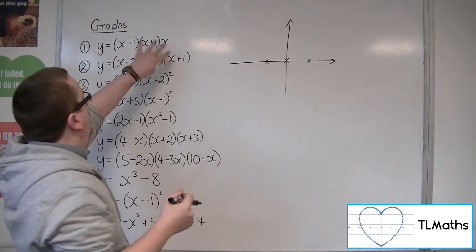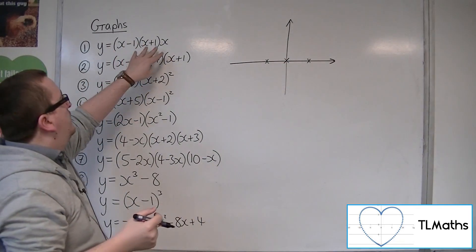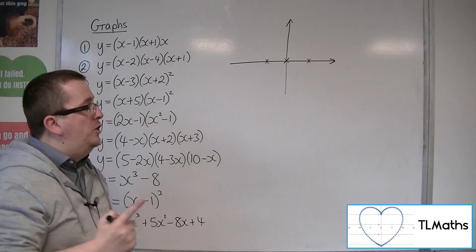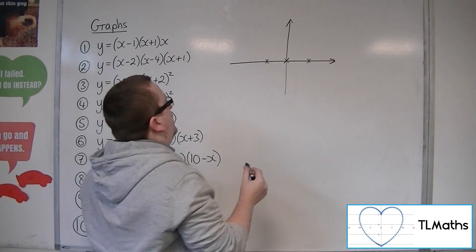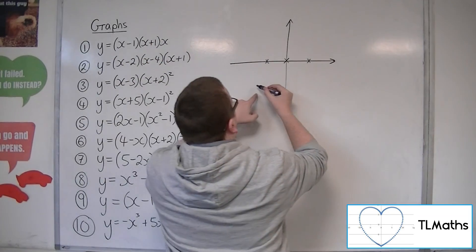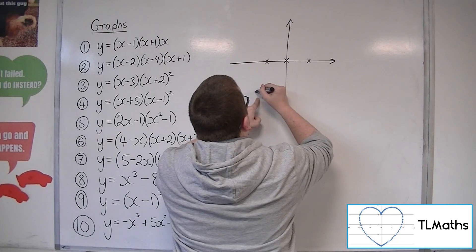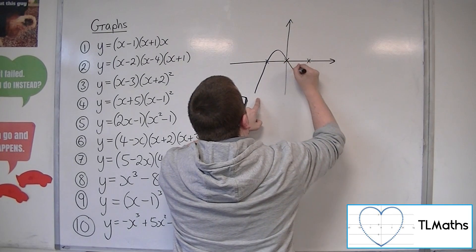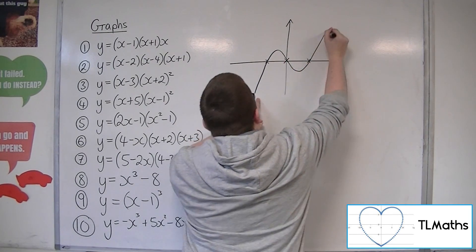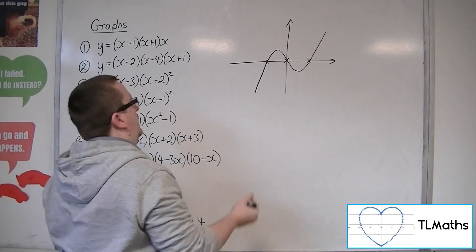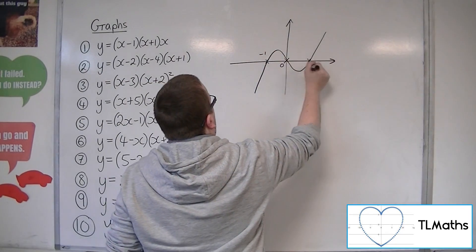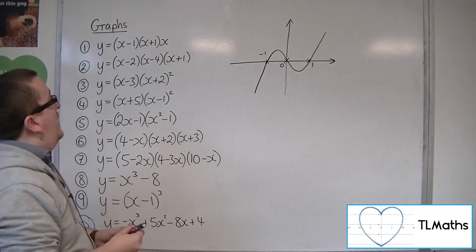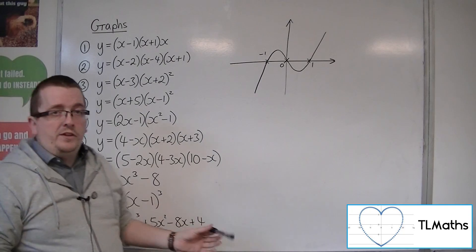Now if I multiplied this out, I would get a positive x-cubed — 1x-cubed. And so we start on the bottom left, and so this curve must look something like this: minus 1, 0, and 1. And that's my first curve.